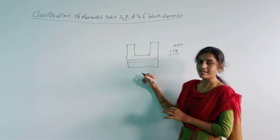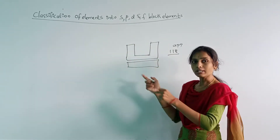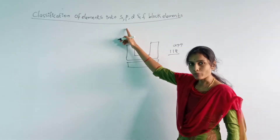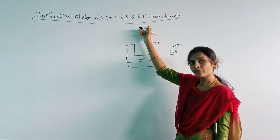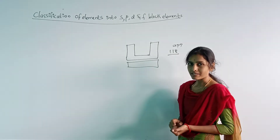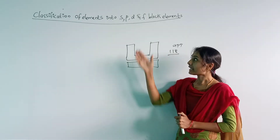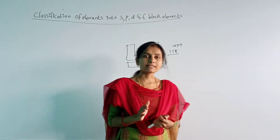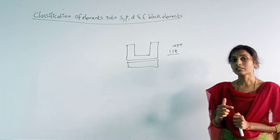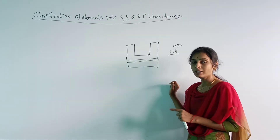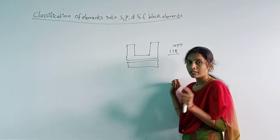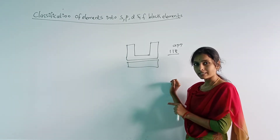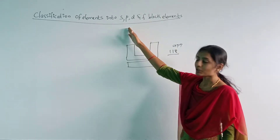Next, they classified the overall table into blocks — mainly 4: S block, P block, D block, and F block elements. The major reason behind this classification is based upon the entrance of the last electron into the respective orbital. The last electron is called the valence electron. Based upon where that valence electron enters, elements are linked into S, P, D, and F.